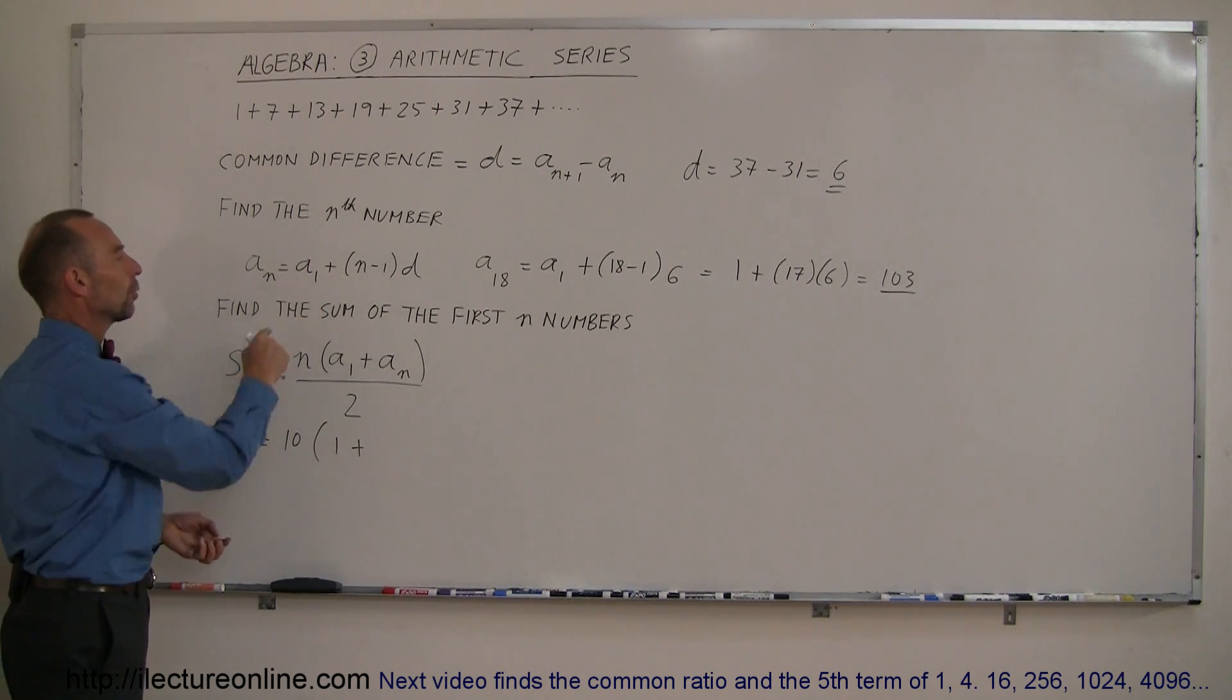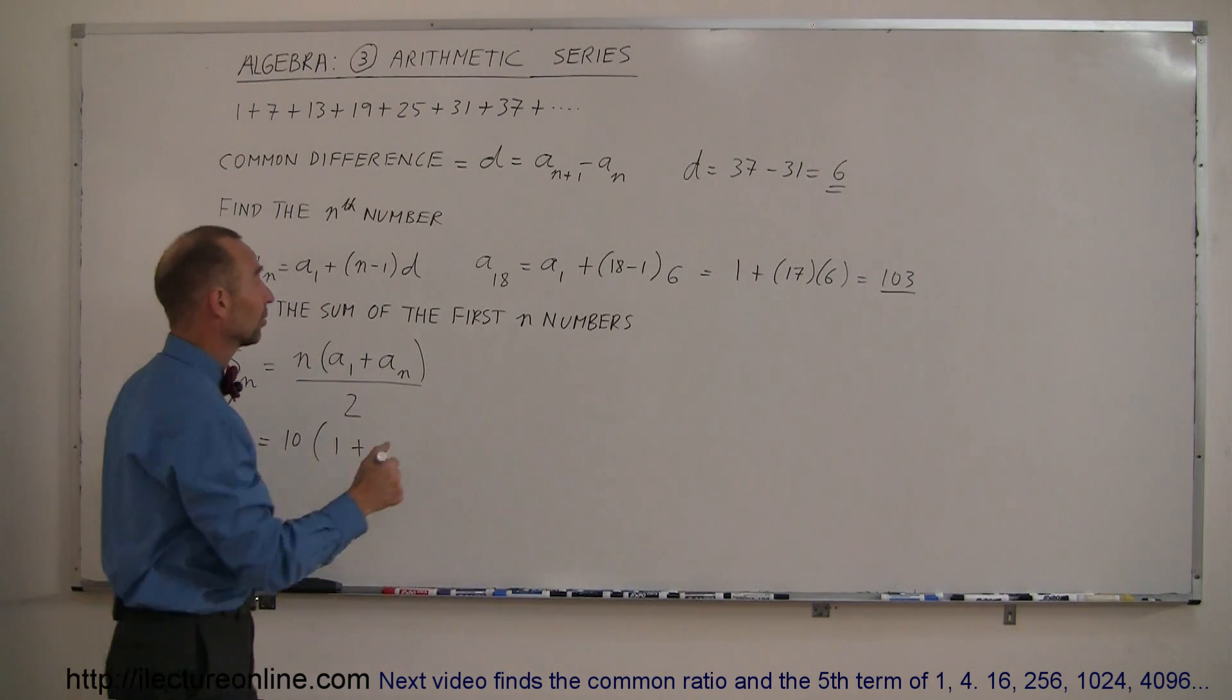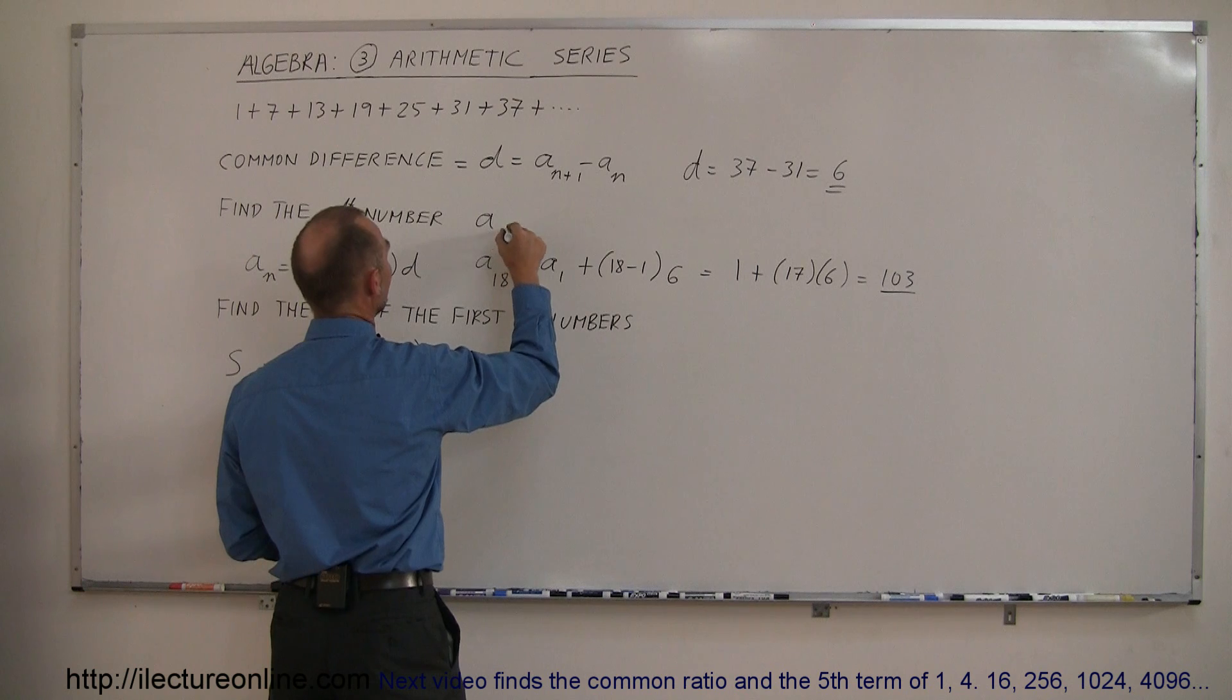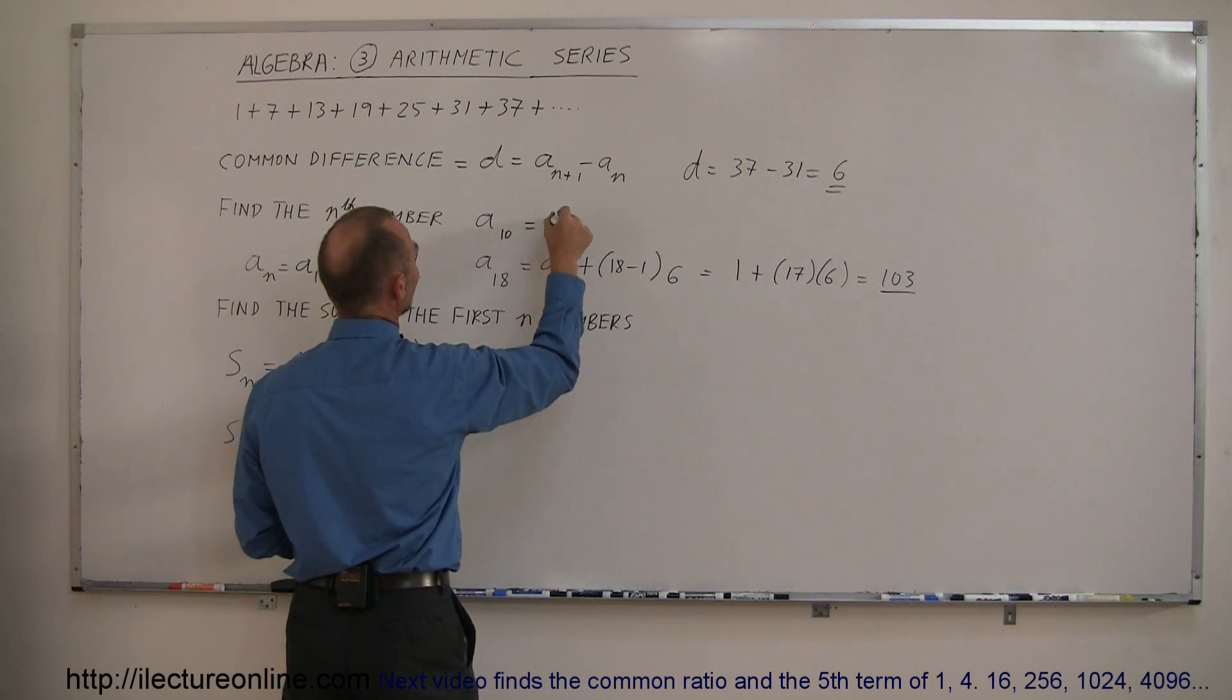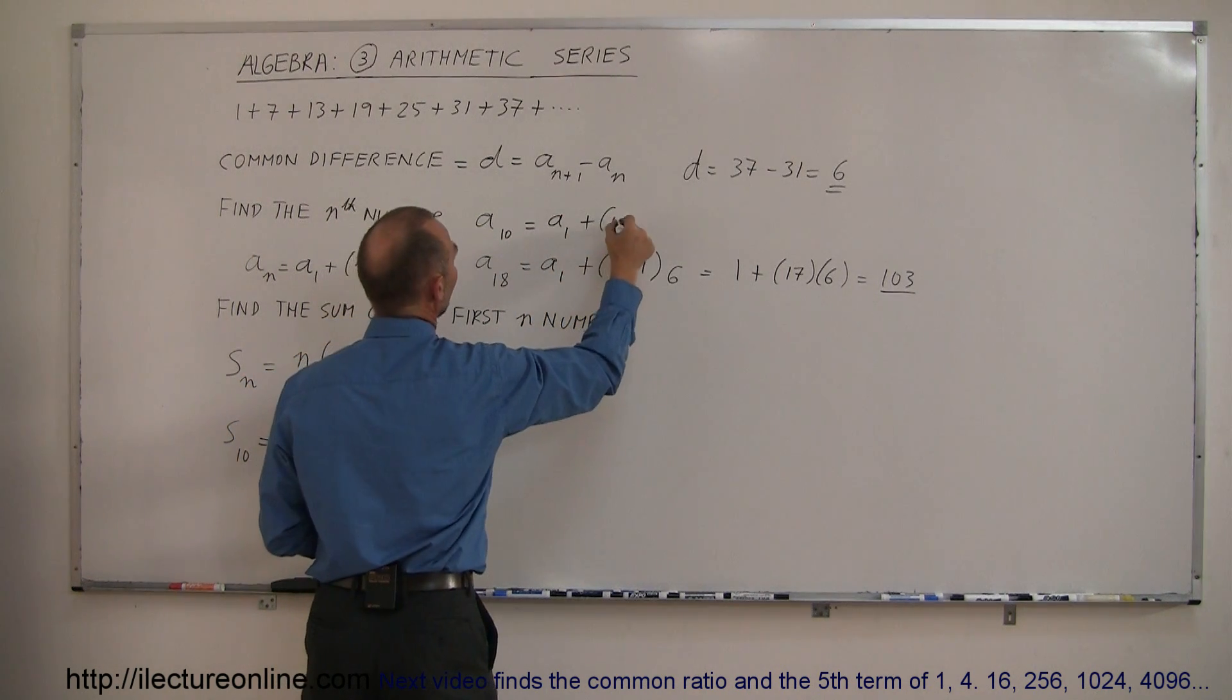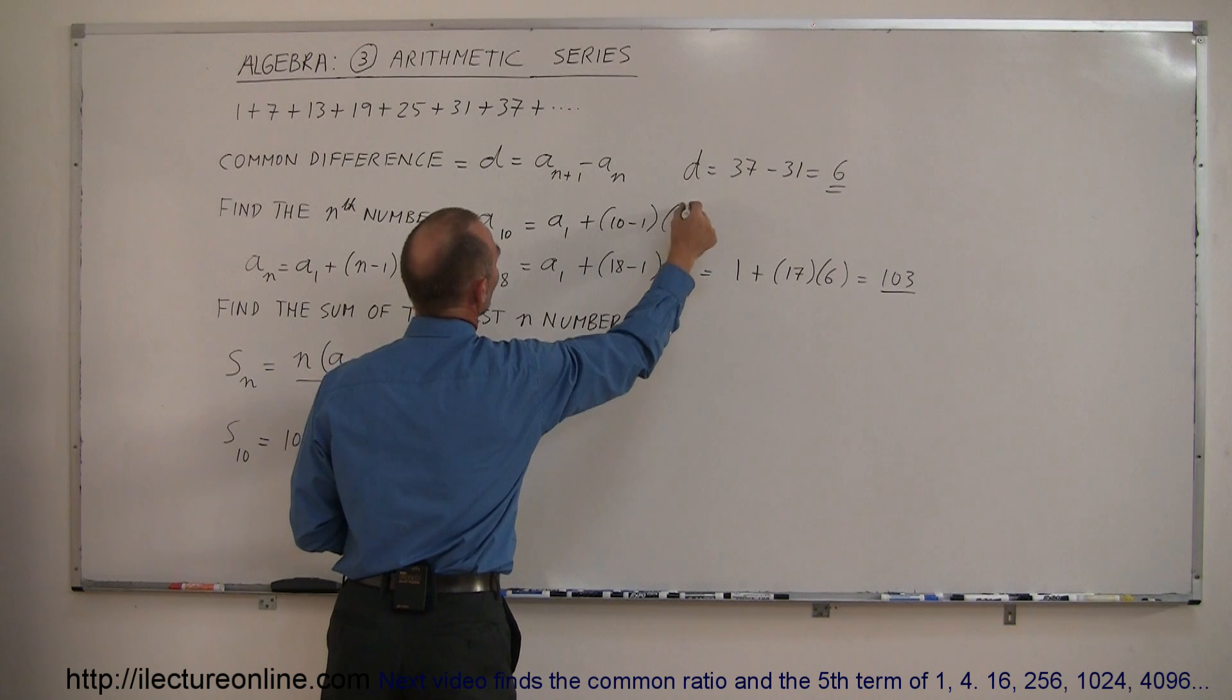Now here you have to go back to the previous equation to find the 10th one in that series. So here we can say that a, the 10th one in that series, equal to a sub 1, plus 10 minus 1 times the common difference of 6.